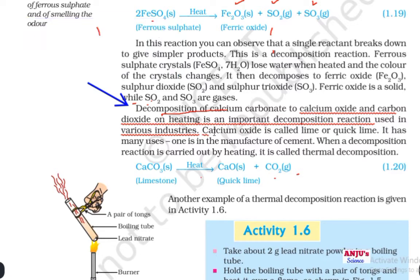Calcium oxide is called lime or quick lime. It has many uses, one being in the manufacture of cement.